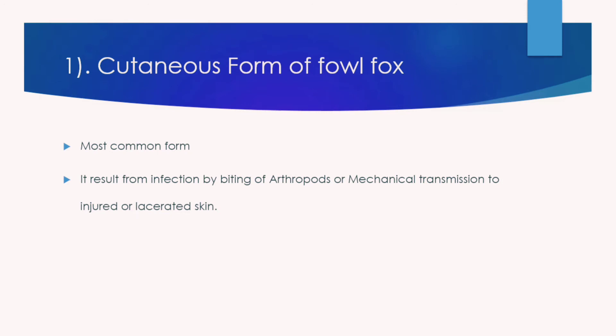The cutaneous form of fowl pox is the most common form. It results from infection by the biting of arthropods or by mechanical transmission to the injured or lacerated skin. The virus enters the bird's body through arthropod bites, mechanical transmission, or through lacerated skin.